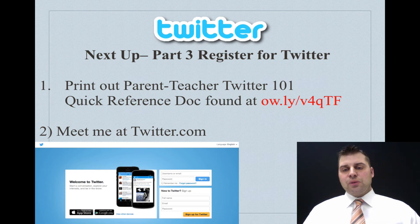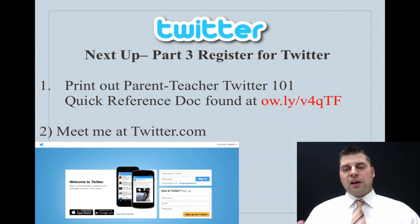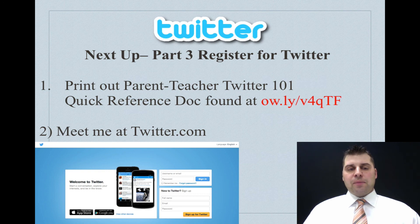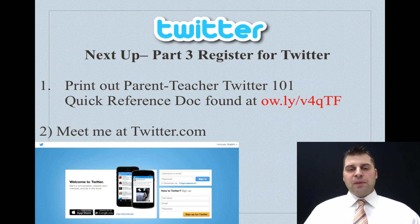The next thing you're going to do is visit the quick reference document for Twitter 101. You can find it by typing into your URL bar — whether you're using Safari, Firefox, Internet Explorer, or another browser on a desktop or laptop — ow.ly slash v4qtf. That is a shortened link that will open a public, open Twitter 101 quick reference guide. Once you've got that open, feel free to print it out so you can have it next to you for the rest of the eCourse. Then I will meet you at twitter.com.